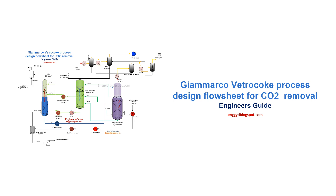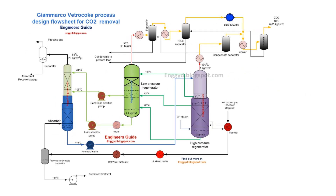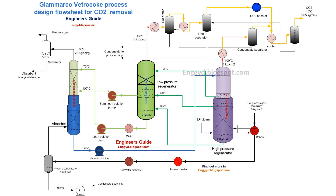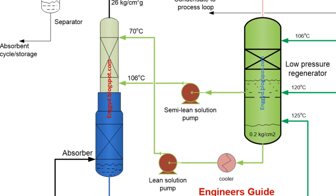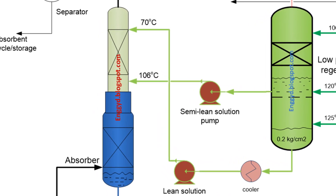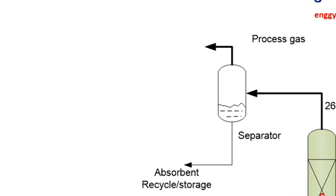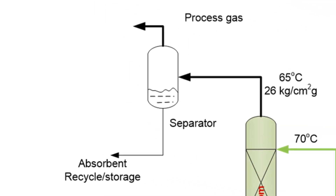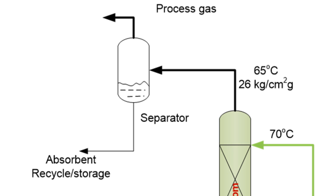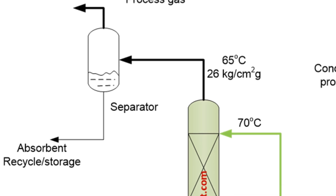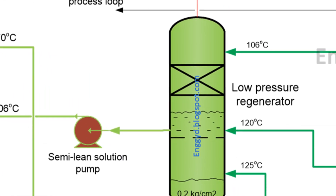The CO2 removal process begins with the absorption tower, where the process gas comes into contact with the absorbent — a hot potassium carbonate solution. The CO2 is transferred from the gas phase to the liquid phase through a counter-current flow. The purified gas, containing less than 1000 ppm CO2, is then sent to the next stage.